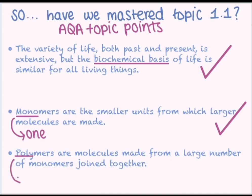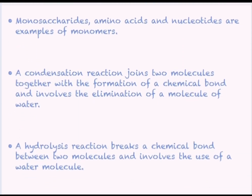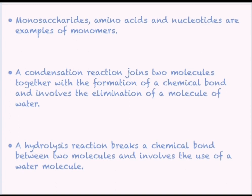Polymers are molecules made from a large number of monomers joined together. Again, when we looked at the definition of polymers, meaning many or multiple, we identified that this must mean that they are molecules made up of single units, so yes, we've mastered that one. Monosaccharides, amino acids and nucleotides are examples of monomers, yes, and we also looked at the example of glycerol and fatty acid being the monomer units of triglycerides or lipids. A condensation reaction joins two molecules together with the formation of a chemical bond and involves the elimination of a molecule of water. So yep, we looked into this point quite extensively. We worked through the specific process for each of our four polymers, what their monomer units were, and we reiterated throughout the fact that each new bond results in the removal of a single water molecule.